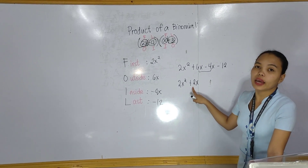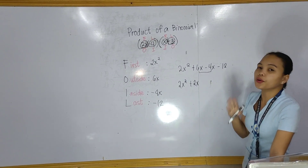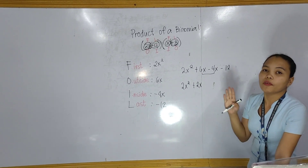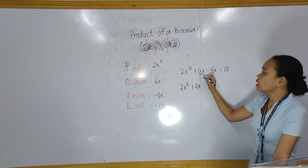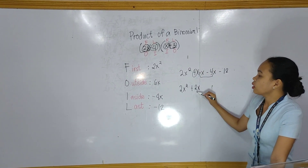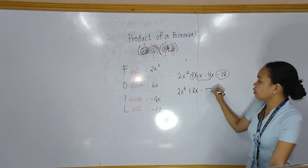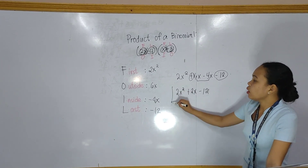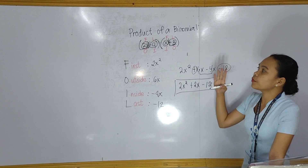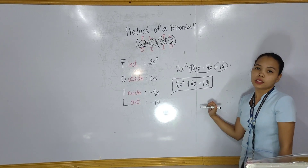Why is it positive 2x? The rule with integers is that when one number is bigger, we follow its sign. Since 6 is bigger than 4, we follow the sign of 6, which is positive. So we get positive 2x. Since there is no like term for negative 12, we just copy negative 12. So our final answer is 2x squared plus 2x minus 12.